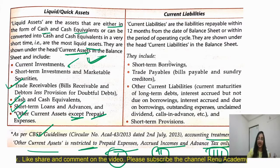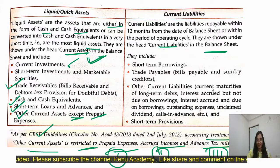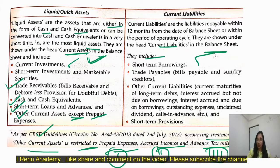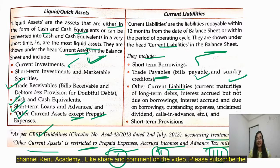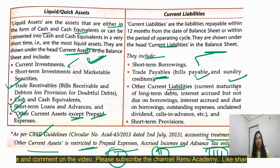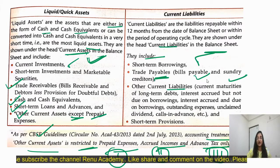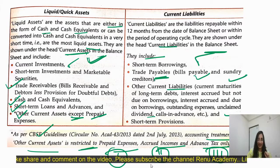Current liabilities are shown under the head of current liabilities in the balance sheet. These include: short-term borrowing, trade payable (bills payable, sundry creditors), other current liabilities, current maturities of long-term debts, interest accrued but due on borrowings, interest accrued and not due on borrowings, outstanding expenses, unclaimed dividends, calls in advance, etc.